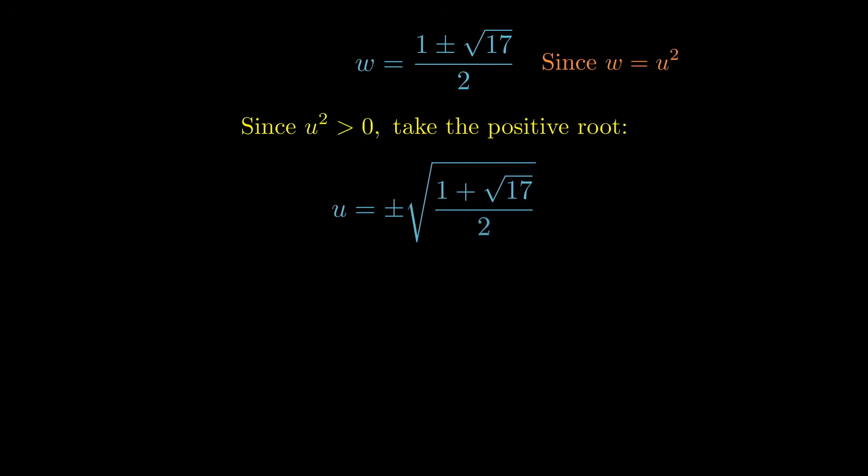And remember what v was? v was 2 over u, so just take this wonky expression and put it under 2. You could play around with the algebra a bit and make it look a little nicer.